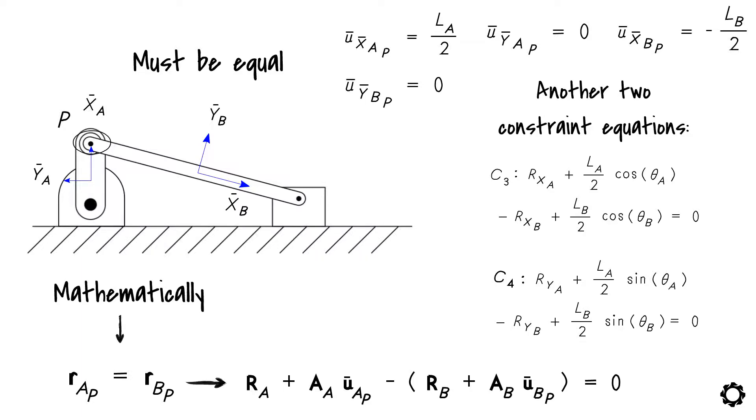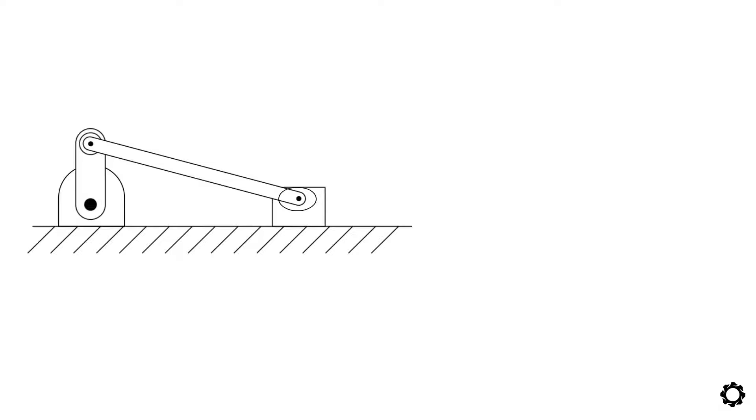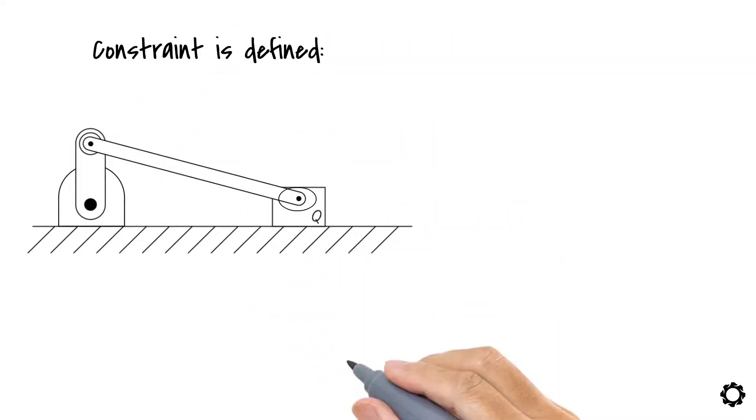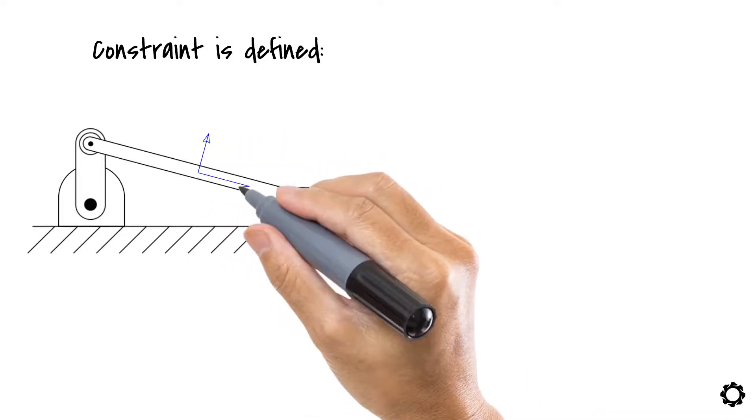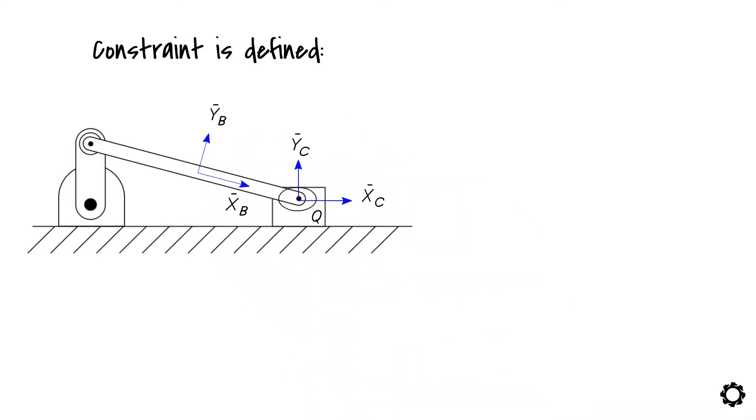Our next constraint to tackle is the revolute joint between the shaft and block. Applying the same procedure as before, this constraint is defined by measuring point Q's position via the shaft-attached reference system and the block-attached reference system. Something like this. RBQ equals RCQ. Similarly, we get RB plus AB U-bar BQ minus RC plus AC U-bar CQ equals zero.